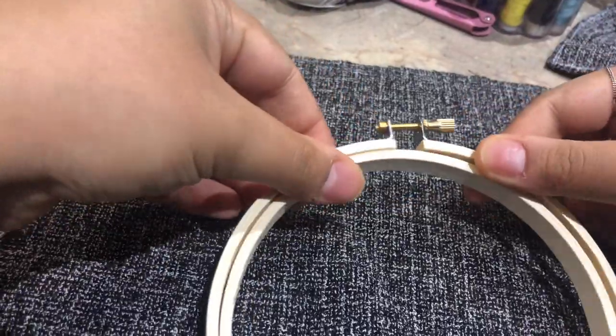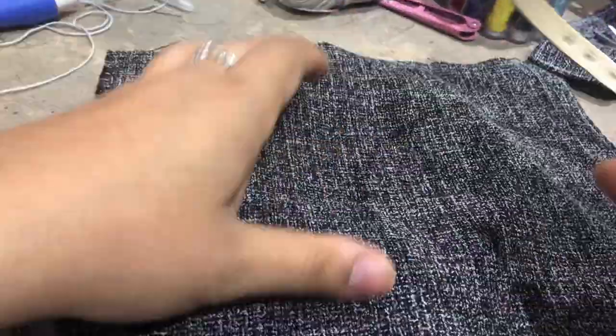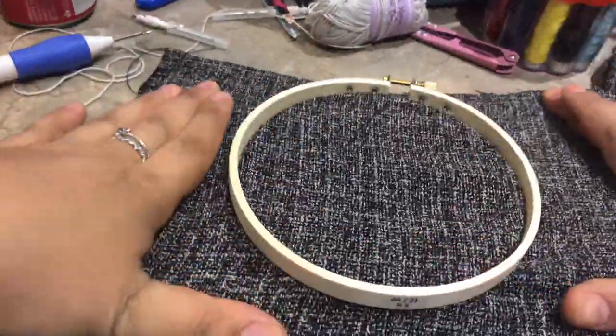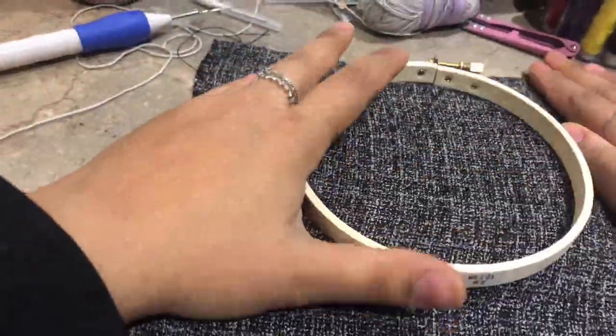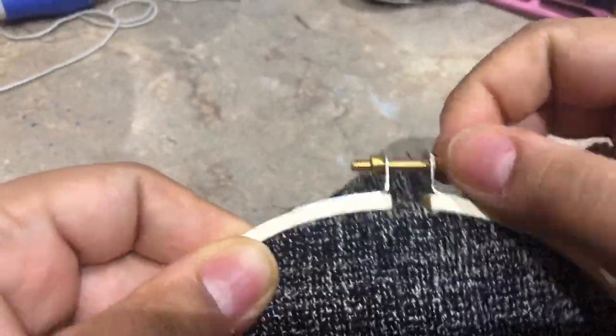How to use the embroidery hoop is to unscrew the top, get the inner circle, put it below the fabric, and then tighten the fabric on top of the smaller circle. Then put the outer circle on top and tighten the hoop up. Now you just have to figure out a design.